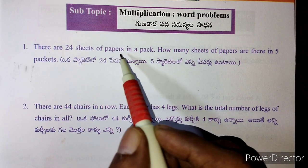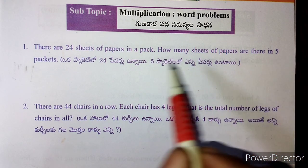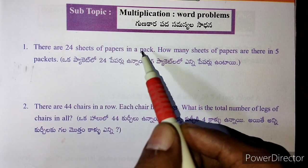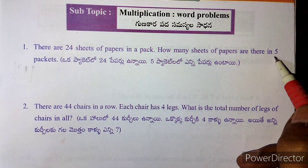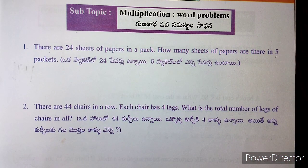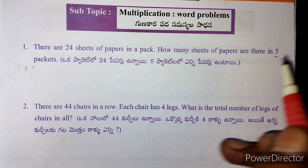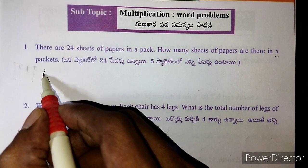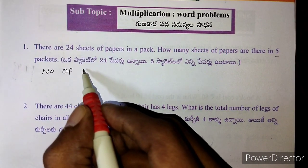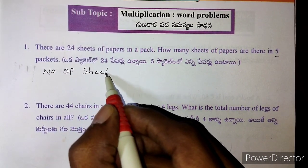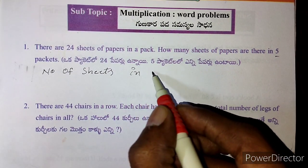There are 24 sheets of papers in a bag. How many sheets of papers are there in 5 packets? Number of paper sheets in 5 packets.